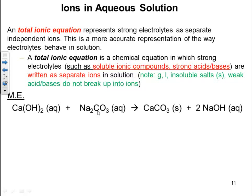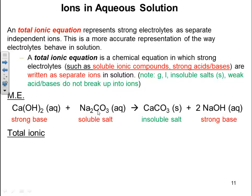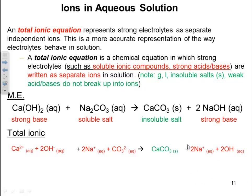Going back to the molecular equation we just did, we know which ones are strong bases, insoluble salts, etc. Now we're going to write our total ionic. We need to look at those things that break up 100% — your strong bases, soluble salts, and strong acids. Calcium hydroxide is a strong base, so it breaks up into ions, carrying in 2 coefficients for hydroxide. Sodium carbonate is a soluble salt, so we have 2 sodium ions and one carbonate ion. The insoluble salt will not break up — it stays whole. Then sodium hydroxide is a strong base, so it breaks up into 2 sodiums and 2 hydroxides.